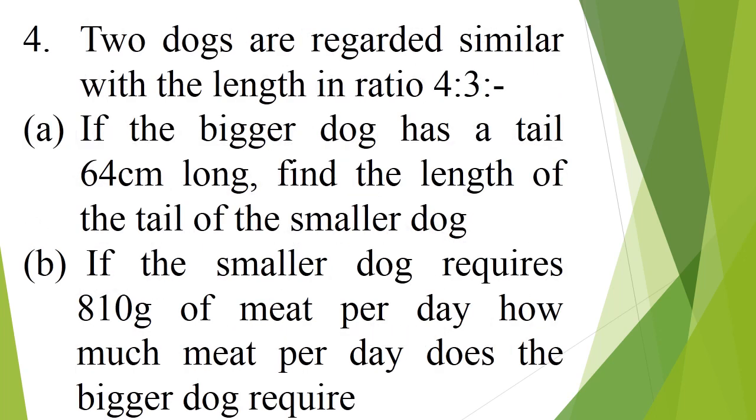Question number 4: two dogs are regarded similar with the length in the ratio 4 is to 3. Part A: if the bigger dog has a tail 64 cm long, find the length of the tail of the smaller dog. Part B: if the smaller dog requires 810 grams of meat per day, how much meat per day does the bigger dog require?